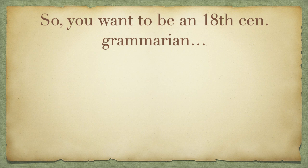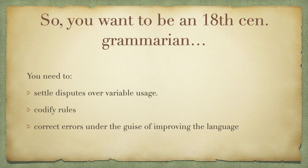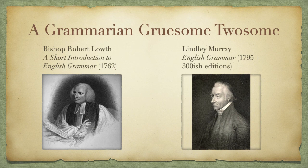Let's think about the work being done by grammarians in the 18th century — think of it as a kind of job. What do you need to be able to do? First, you need to settle disputes over variable usage: people were using different constructions and different ways of phrasing things, and you need to decide which one is right and which is wrong. It's also about codifying the rules — writing them down so other people will know what's correct. And you also need to be prepared to correct errors, going out and finding people who aren't playing by the rules. Because part of your job as a grammarian of English is you are a self-appointed protector of the language. It's your job to make it better and to protect it from the people who would mess it up.